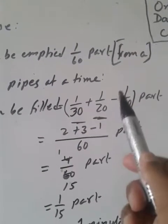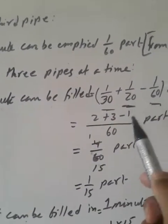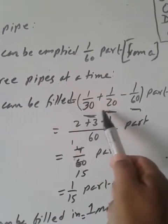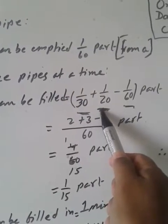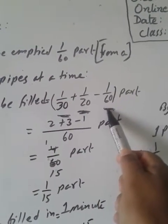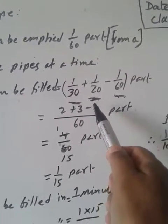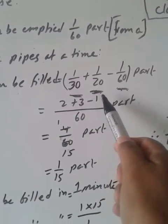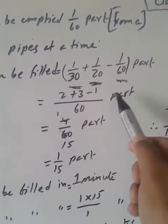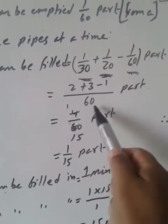So when three pipes are opened, in one minute the first pipe fills 1/30 part, the second pipe fills 1/20 part, and we subtract the third pipe. So it is: 1/30 plus 1/20 minus 1/60.